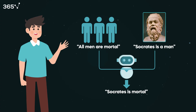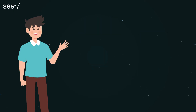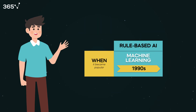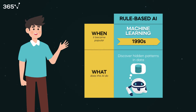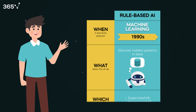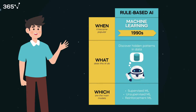The next fundamental evolution in AI was machine learning, whose major expansion occurred in the 1990s. ML relies on complex algorithms and statistical models to find patterns in data and learn from them, allowing the machine to become better at executing tasks over time. We can distinguish between supervised, unsupervised, and reinforcement learning in machine learning.